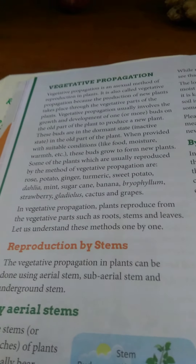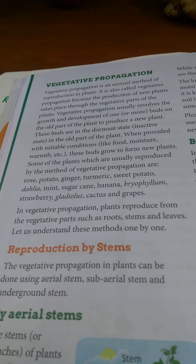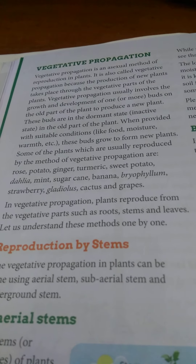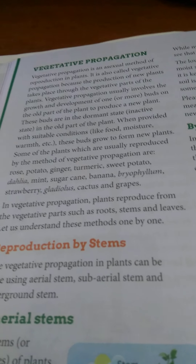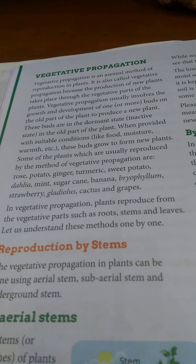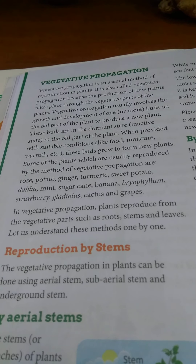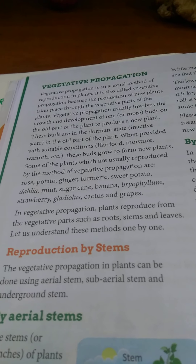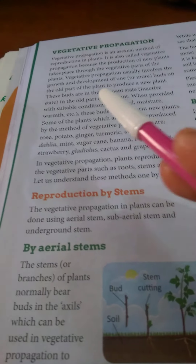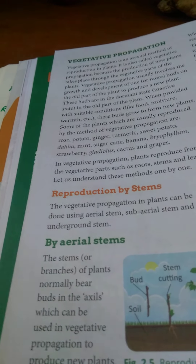Students, we were discussing the vegetative propagation method. I told you that some buds may be present on roots, stems, or leaves, and these buds grow to form new plants. This method takes place in turmeric, ginger, potato, rose, bryophyllum, banana, sugarcane, strawberry, gladiolus, cactus, and grapes.